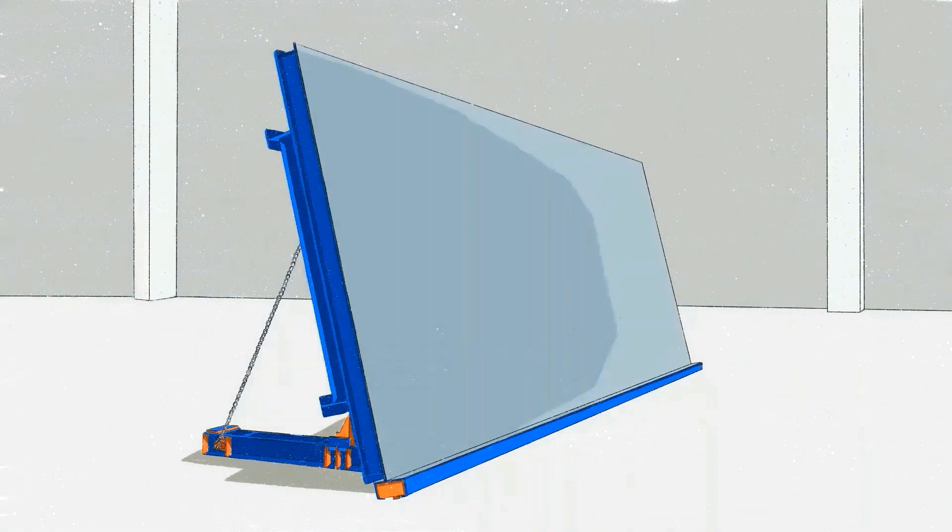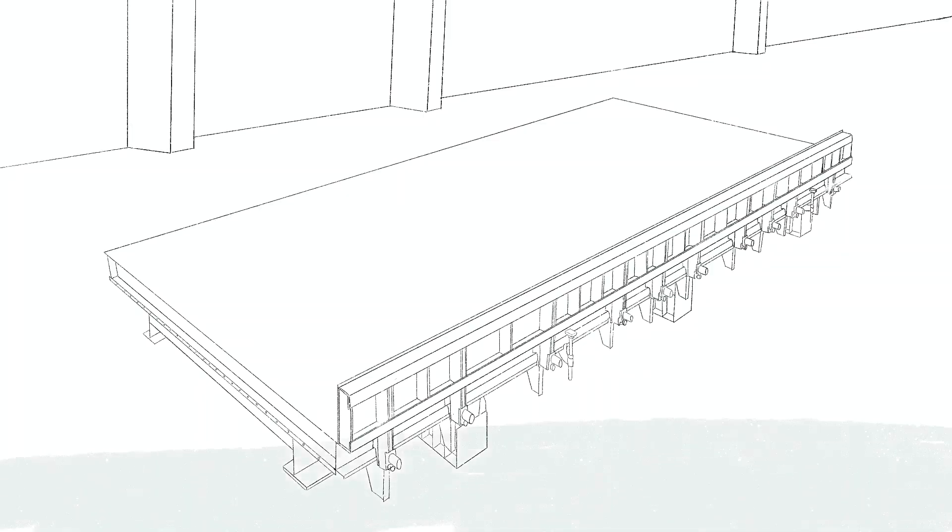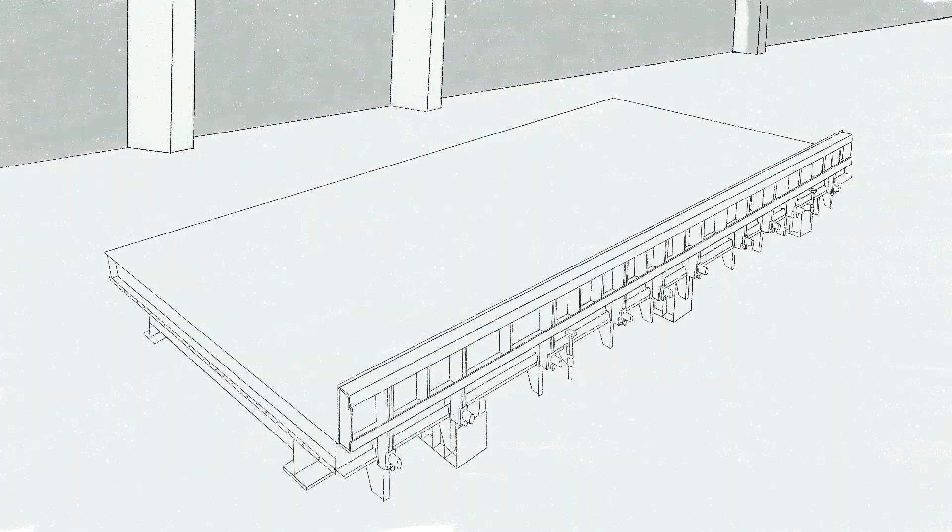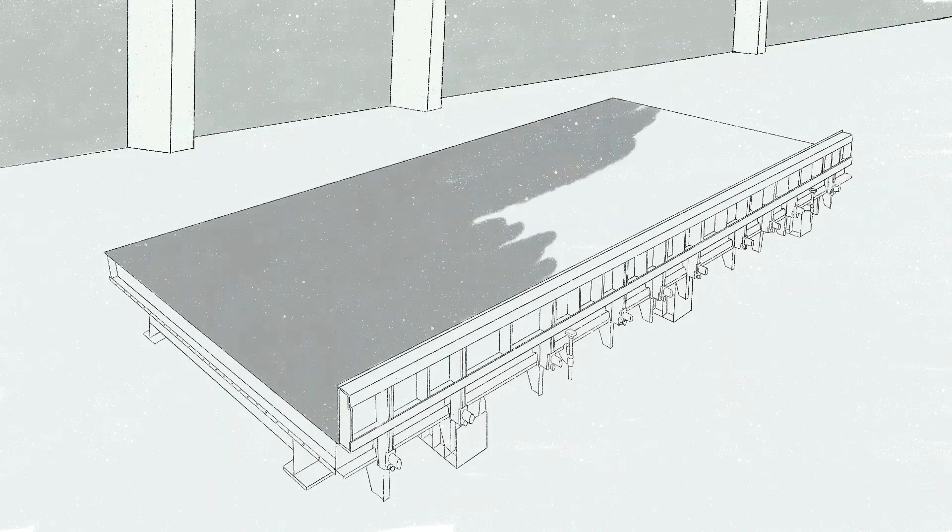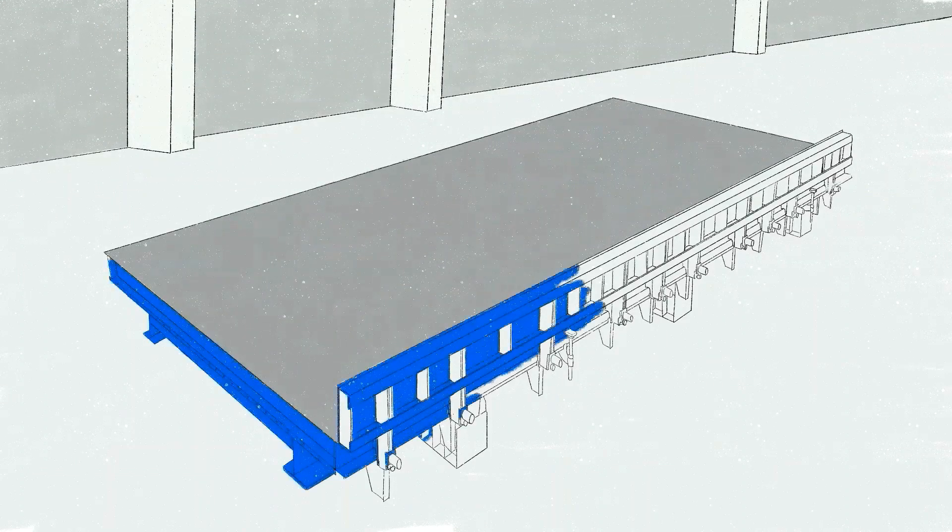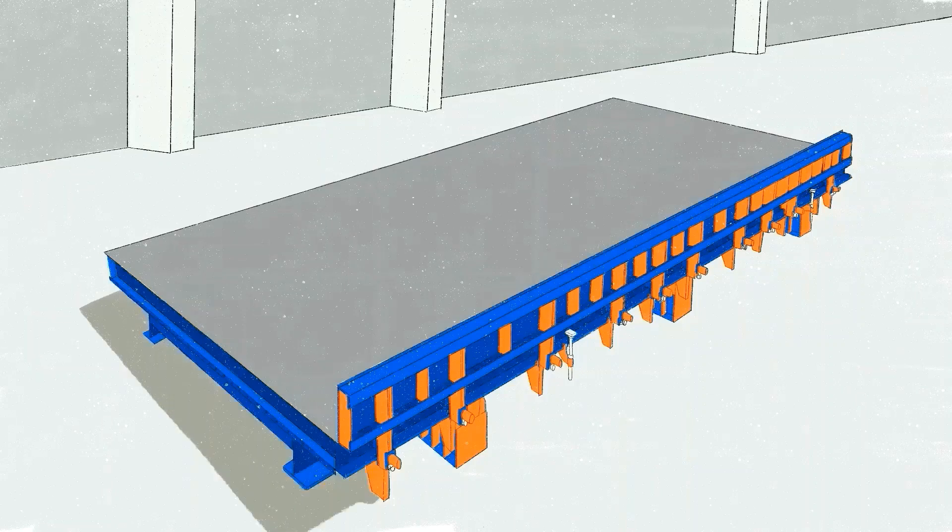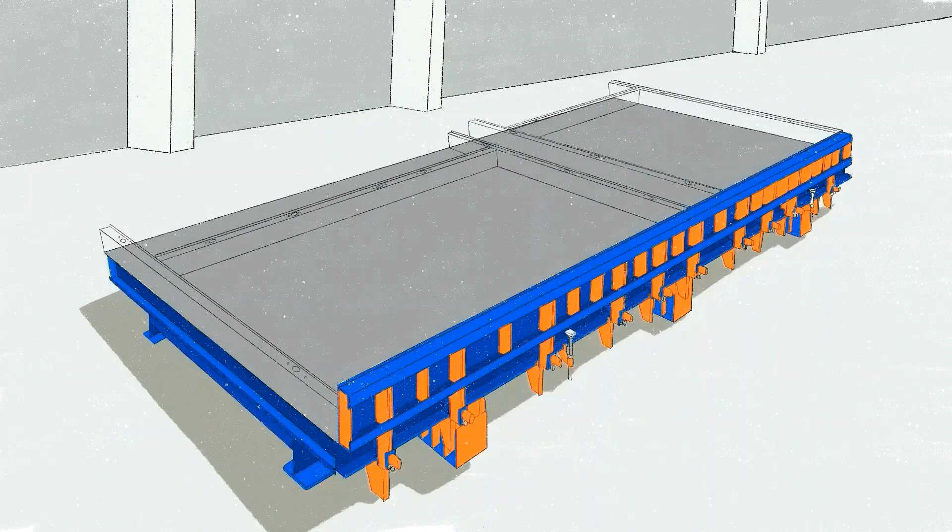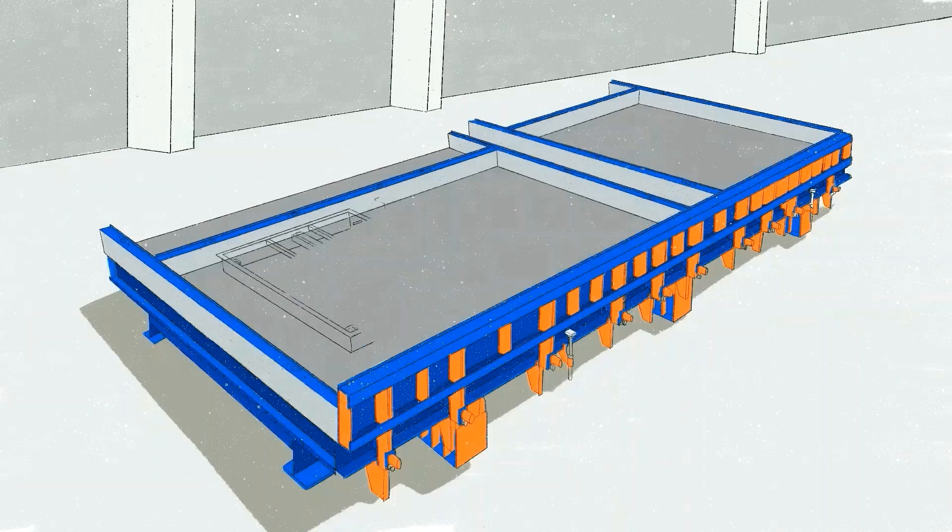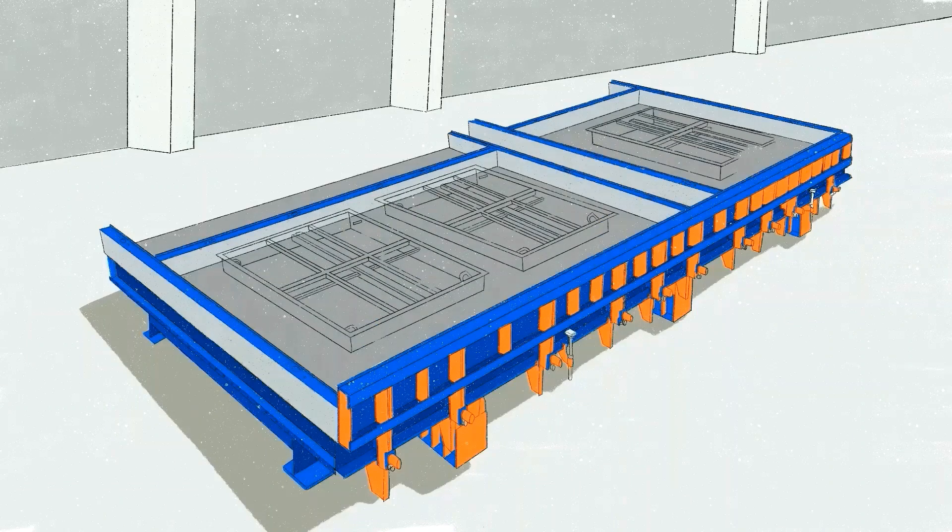With tilting tables, it is possible to manufacture several products simultaneously. They can be of different width, length, or thickness. This is achieved with the help of interchangeable magnetic single-sided or double-sided shuttering profiles ranging from 1,000 to 6,000 millimeters in length.